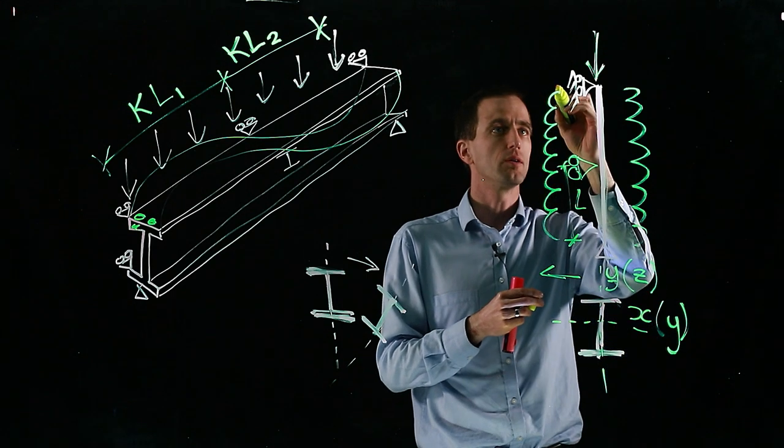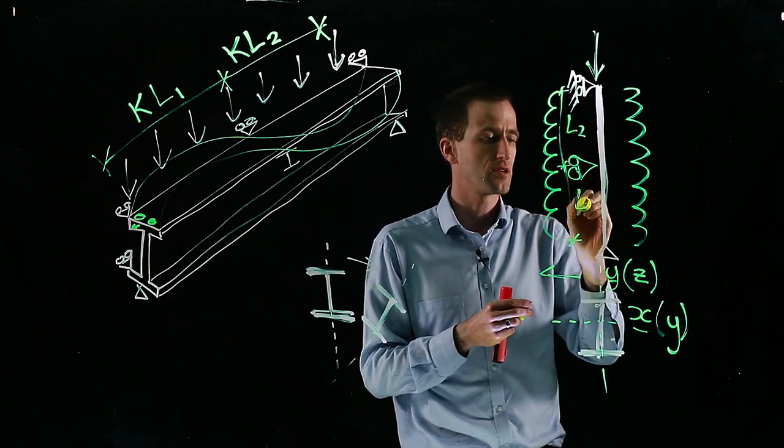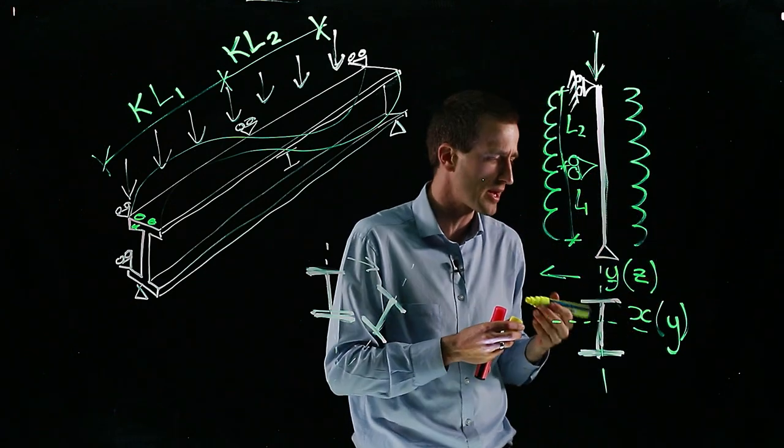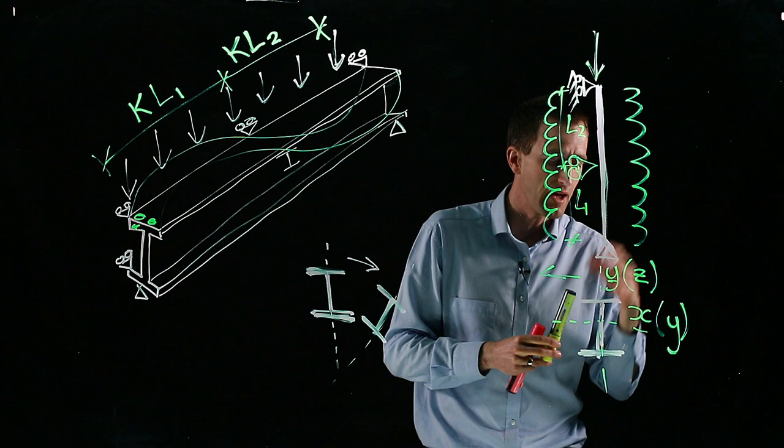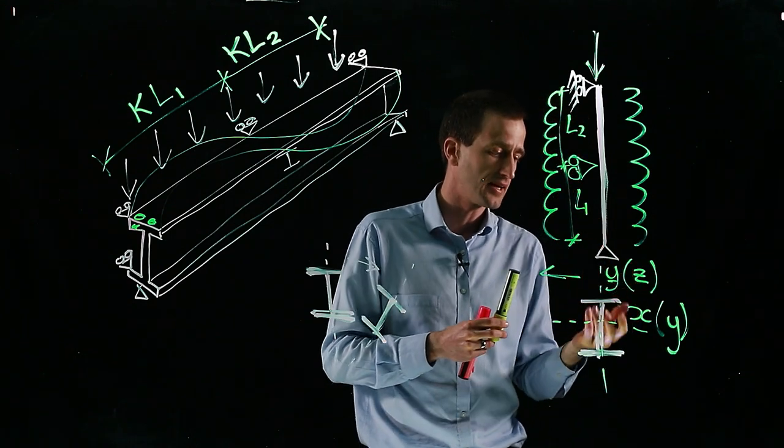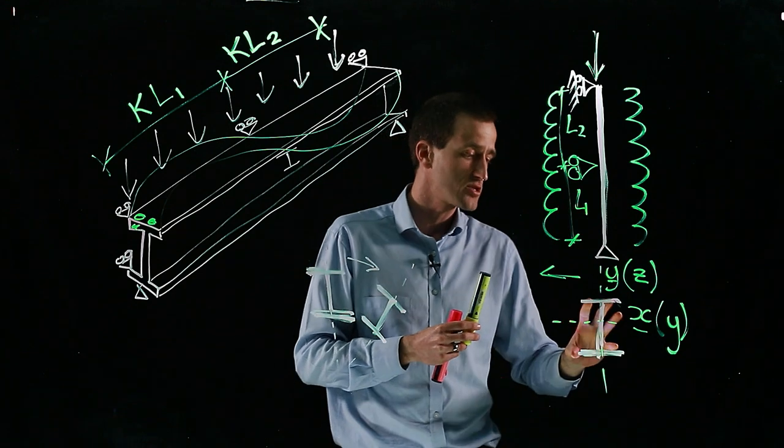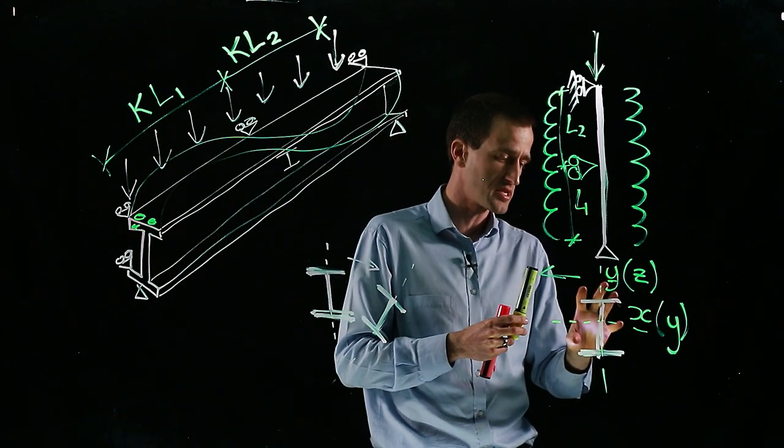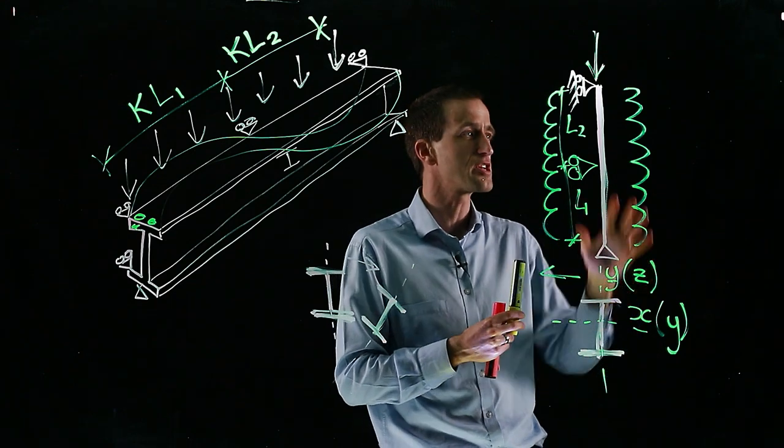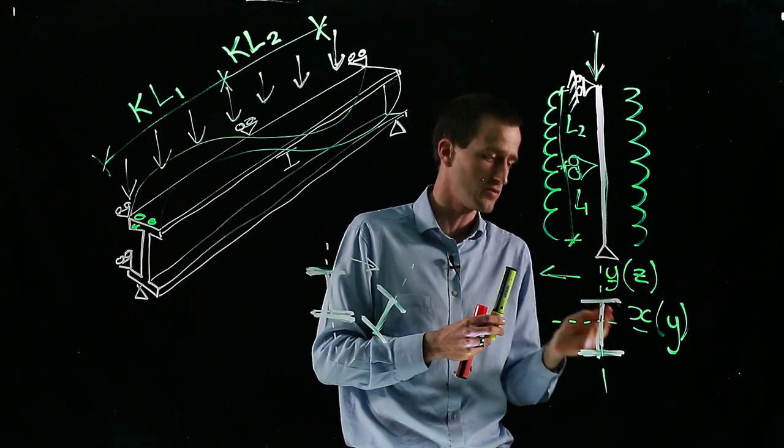And once again, we could have two L values, L1 and L2, and we would check each of these with the load coming down just to make sure it is strong enough. And we would use the reduced capacity of the material in fire. So if this column was at 600 degrees Celsius, we'd use the 600 degree Celsius yield strength and Young's modulus in our calculation for the capacity of this column.